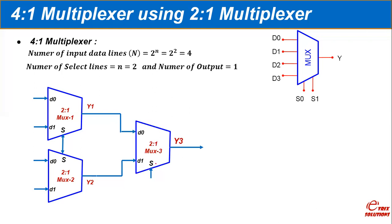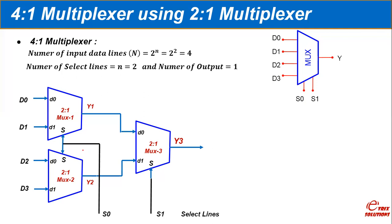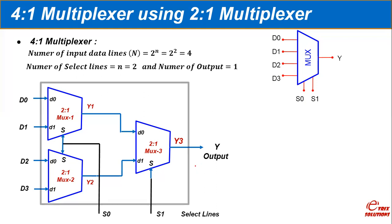This is the complete design of a 4x1 multiplexer using three 2x1 multiplexers. D0 and D1 are inputs of multiplexer one, D2 and D3 are inputs of multiplexer two. There are two selection lines: S0 is the common selection line for multiplexer one and two, and S1 is the selection line of multiplexer three, with a single output Y. You can verify the operation of this multiplexer tree using a truth table.